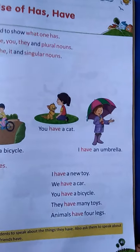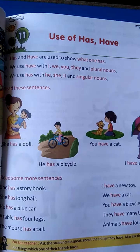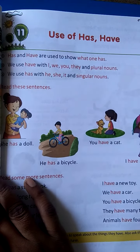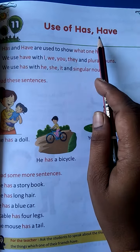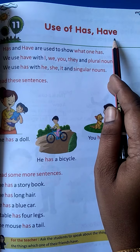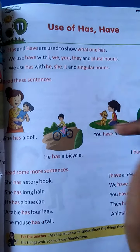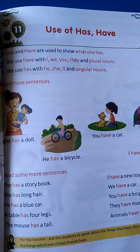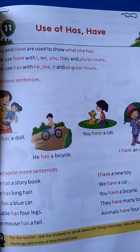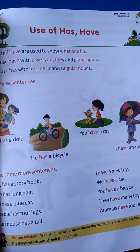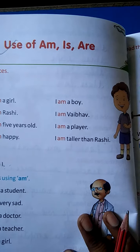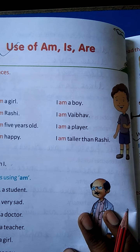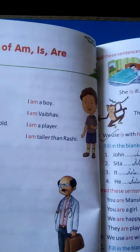See beta, on page number 41, it is your chapter 11. The name of chapter 11 is 'Use of Has or Have.' Today we will discuss about use of has or have. In my previous video we have discussed about use of am, is, are.